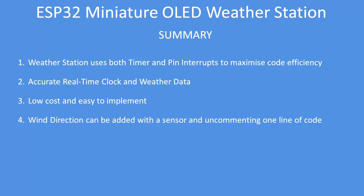In summary, it's a miniature weather station that uses timer and pin interrupts to maximize code efficiency, so when you see the code there isn't an awful lot to it. It provides a very accurate real-time clock, and the weather data is reasonably accurate — I've calibrated mine against a Davis weather station, but you can calibrate against a local weather station. Wind speed and direction are absolute if you add that function. It's low cost and easy to implement, and adding wind direction can be completed with just two lines of code and one print statement. I hope you found this project useful and interesting — if you do build one, please enjoy it.